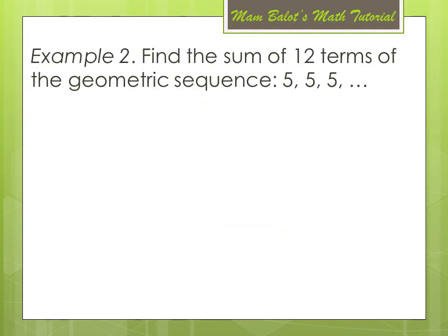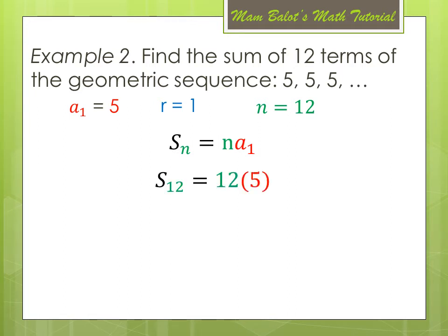For example, find the sum of 12 terms of the geometric sequence 5, 5, 5, and so on. Clearly a sub 1 is equal to 5, r is equal to 1, and n is equal to 12. We use the formula S sub n equals n times a sub 1, substituting 12 times 5, which equals 60. So the sum of those 12 terms is 60.